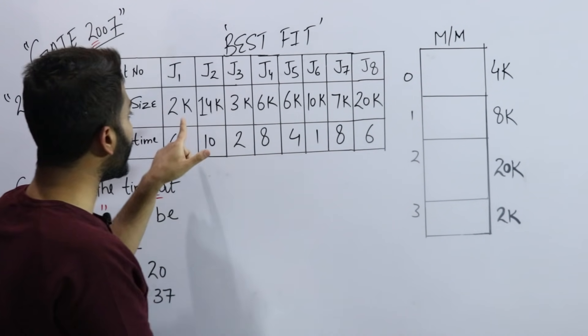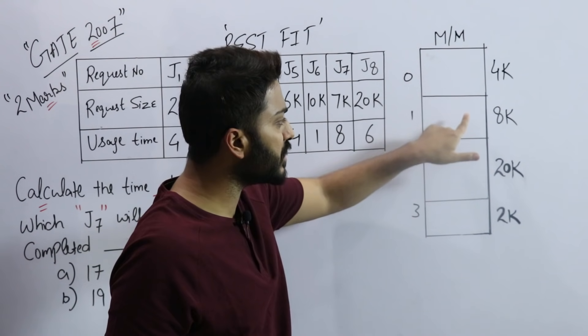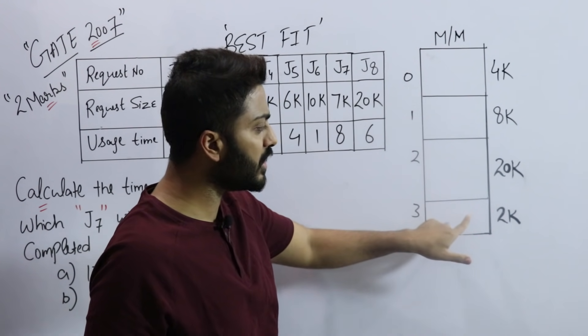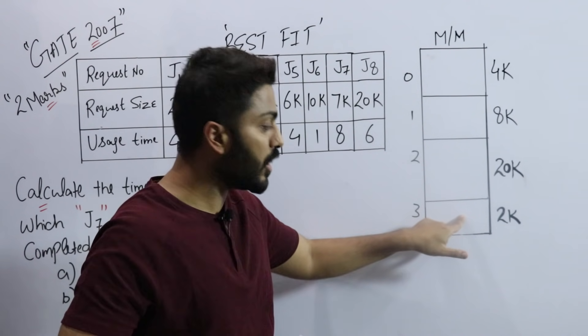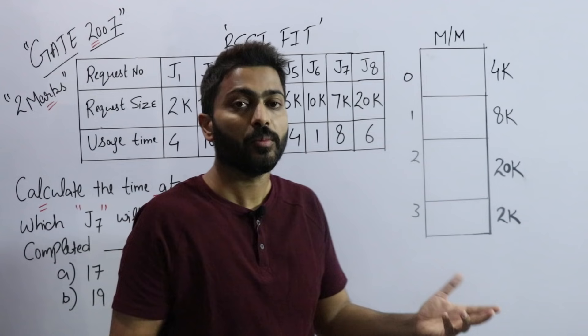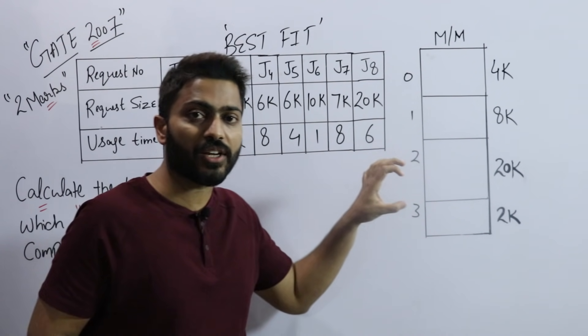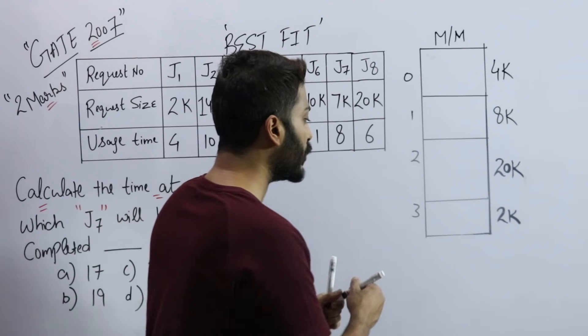If I put 2k in the 4k slot, 2k space will remain. I cannot put it in these other slots. But if I put it in the 2k slot, the remaining space will be zero - no internal fragmentation because J1 will totally fit into this slot.